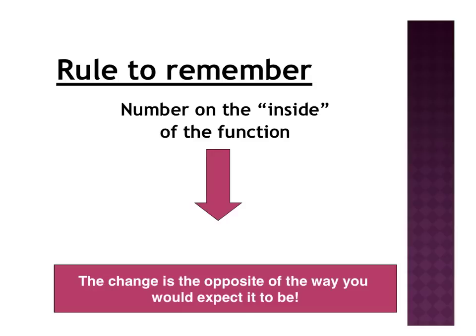We also need to remember that the change is the opposite of what you'd expect. So if I'm adding 7 inside the function, you're actually moving to the left 7. If I'm multiplying by 1/4 on the inside, I have a horizontal stretch by a factor of 4 because I flipped it. You've got to think opposite when doing horizontal transformations.